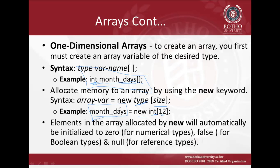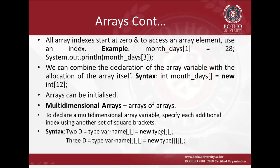If you create an array this way, all the elements at every index are initialized to the default value of the data type. Since we're using int, the default value is zero, so all 12 memory spaces will have zeroes as initial values. Array indexing always begins from zero. So monthDays[0] is the first element, monthDays[1] is the second, and monthDays[11] is the 12th. If you try to access monthDays[12], that will give you an ArrayIndexOutOfBounds error, because the highest valid index is 11.